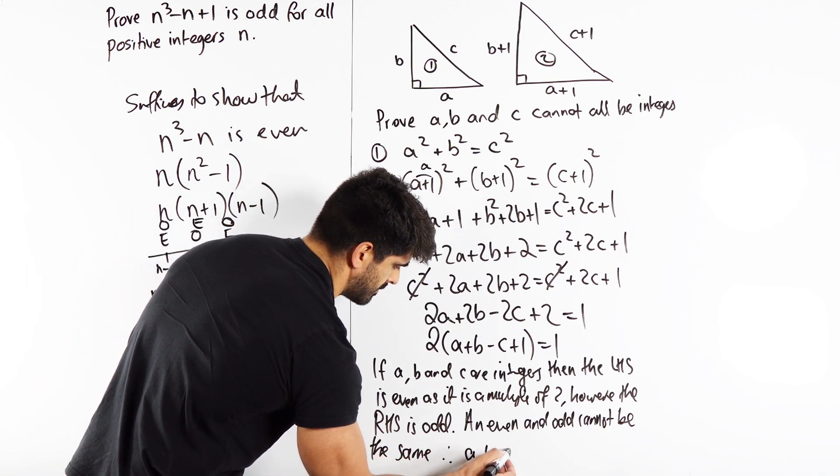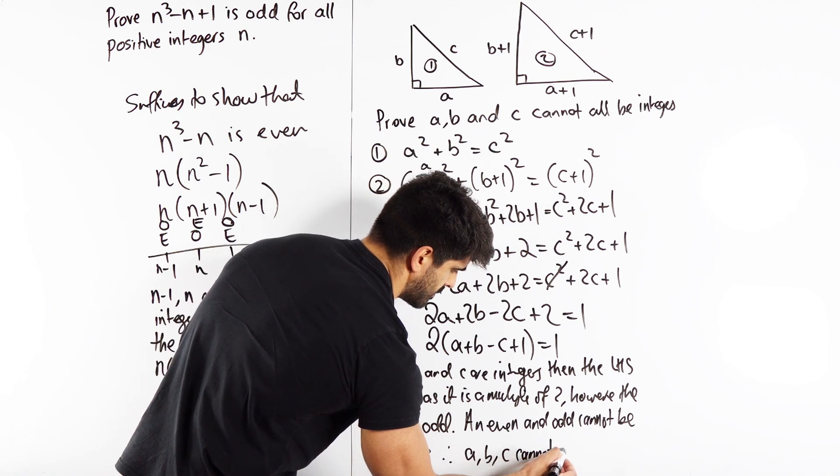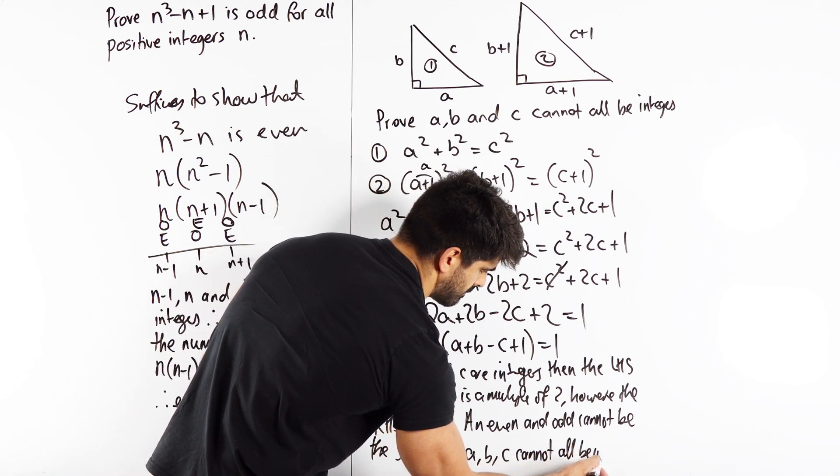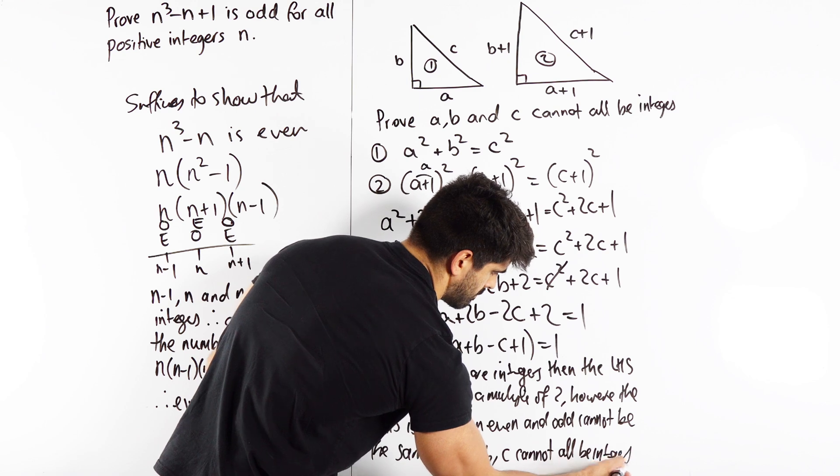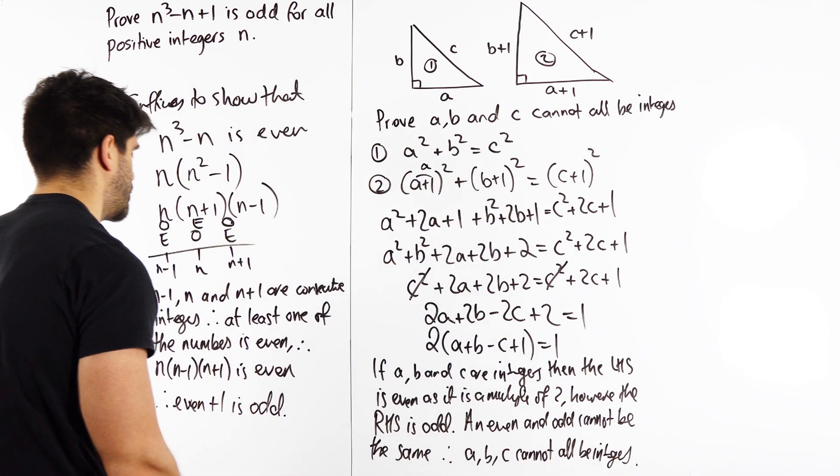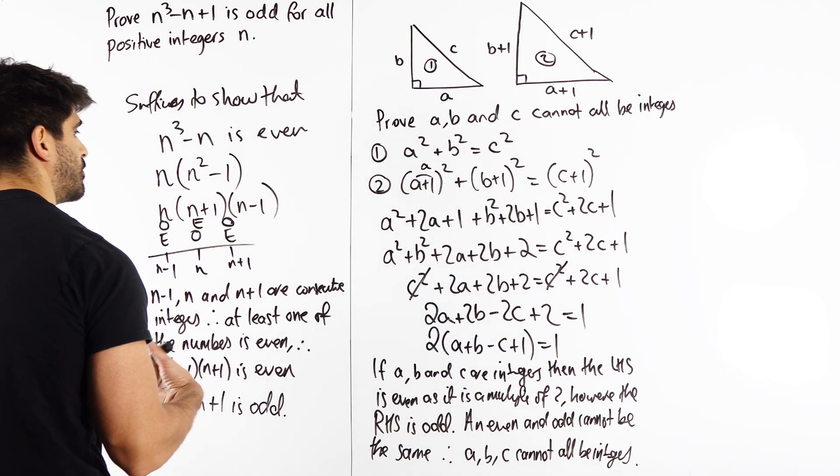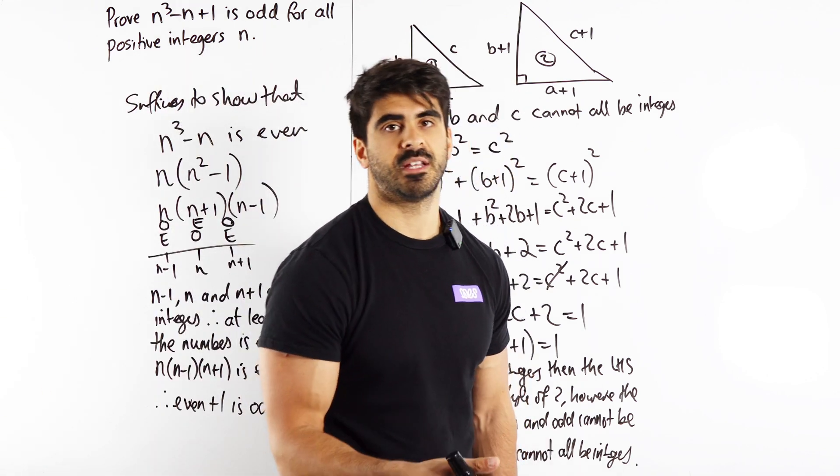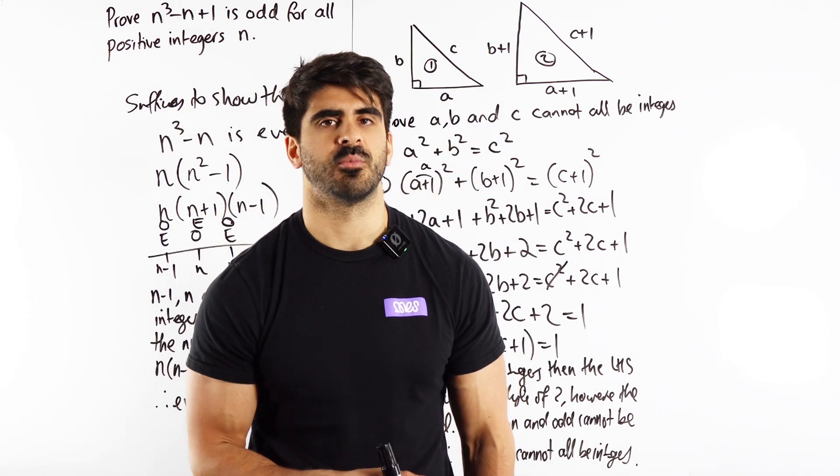Therefore, A, B, C cannot all be integers. So it does require an explanation for all of them. So guys, for proof questions, always write a cheeky explanation at the end, just to make sure you understand what you're doing.